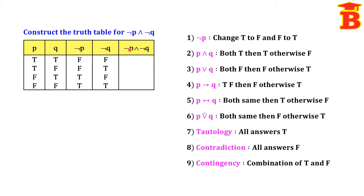Now finally for NOT P AND NOT Q, take AND for these two columns. AND means both true then true, otherwise false. Only in the final row we have both true, so that answer is true. Otherwise all remaining answers are false. So the final answer is F, F, F, T.